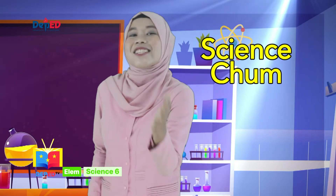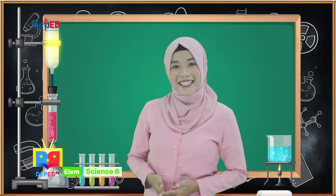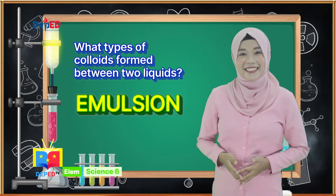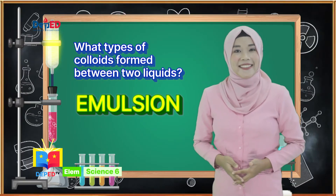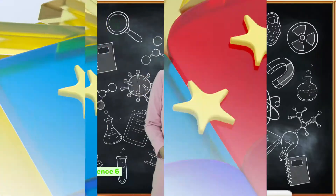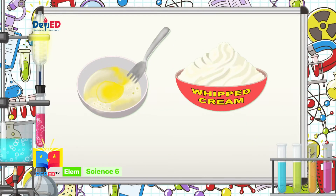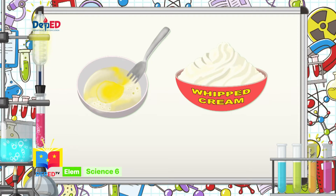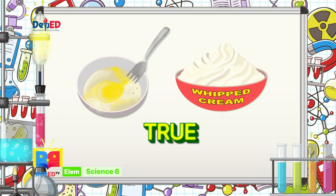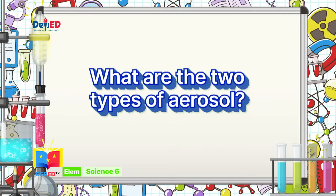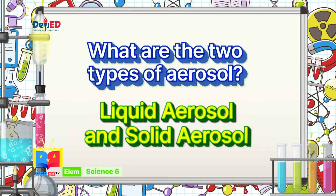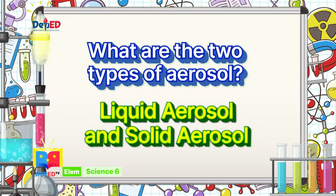You're watching Science John! In our previous episode, you learned about colloids and their characteristics. What types of colloids are formed between two liquids? Great! It is emulsion. True or false: egg white and whipped cream are examples of foam, one of the types of colloids. The correct answer is true. What are the two types of aerosol? Very good! The two types of aerosol are liquid aerosol and solid aerosol.